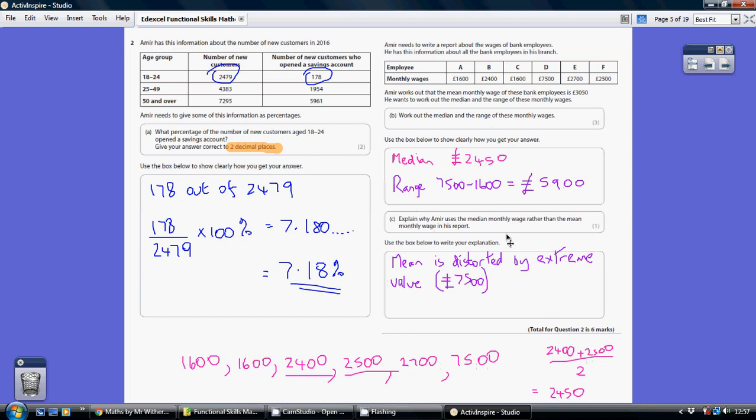Part C asks why is the median monthly wage rather than the mean monthly wage being used in this report. The reason is that the mean, which is when you add them all up and divide by the number of values, isn't very accurate if you've got one particularly large value. It just distorts the result.